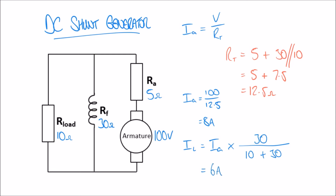So marking these values on our diagram: the armature current emerging from the armature is 8 amps, the load current is 6 amps, and the remaining 2 amps must go through the field windings.